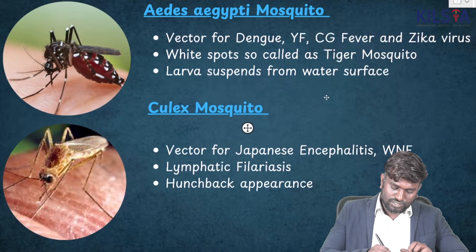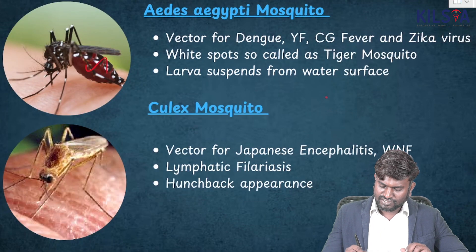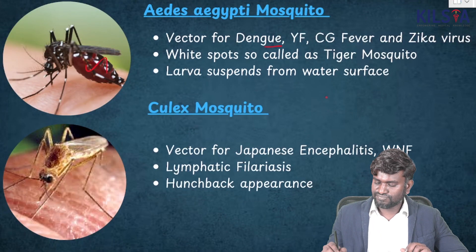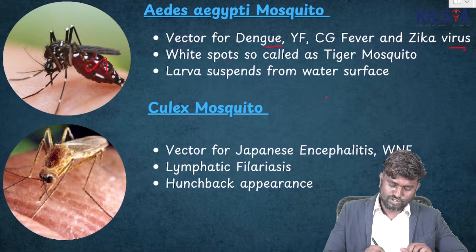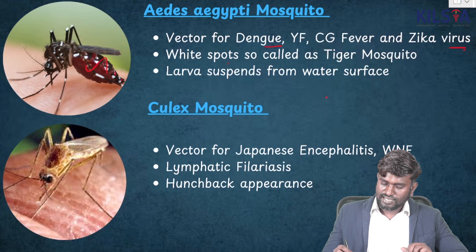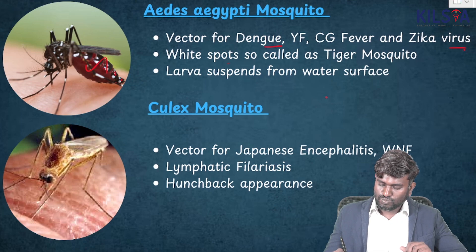This one is going to be Aedes aegypti mosquito — vector for Dengue, Yellow fever, Chikungunya fever, and also Zika virus. White spots — also called tiger spots. Larva suspends from the water surface.